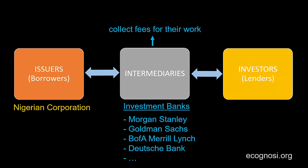Examples of investment banks include Morgan Stanley, Goldman Sachs, Bank of America Merrill Lynch, and Deutsche Bank, to name a few. Morgan Stanley and Goldman Sachs are purely or almost purely investment banks, whereas the others maintain investment banking units but are also involved in other types of banking services. The Nigerian company will get in touch with an investment bank or a syndicate — meaning a group — of investment banks to undertake the issue. For the sake of this example, let's say it enters an arrangement with Morgan Stanley.